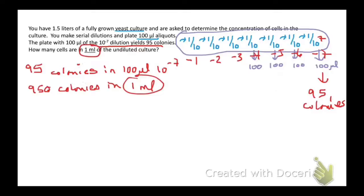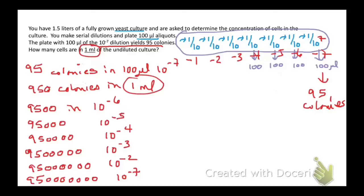If you want to do this the easy way, this means that there were 9,500 in the next highest dilution, 10 to the minus 6, then 95,000, 950,000, etc., until you get up to your 10 to the minus 1 dilution, which has 950 million, it looks like.